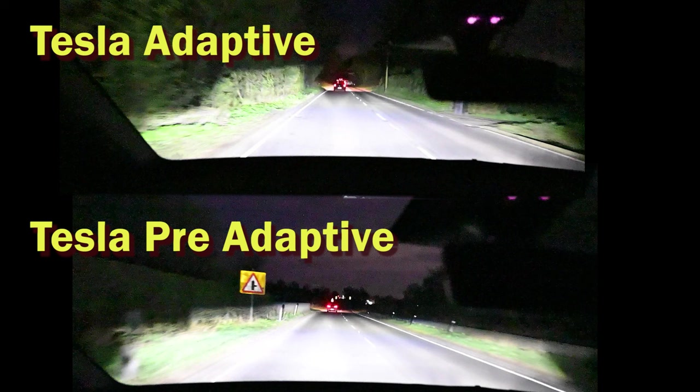And that's one of the main advantages of the adaptive headlights: the fact that they can illuminate the road surrounding an obstacle that it needs to blank out. I mean, that's essentially what adaptive headlights are doing.